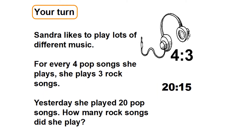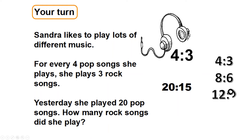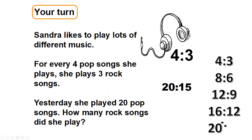The answer is 15 rock songs. She played 20 pop songs. Using my times tables: four, eight, twelve, sixteen, twenty — so I've times it by five. Then I do the same here: three, six, nine, twelve, fifteen. You can see it goes up in terms of times tables — it's not always the same multiplier.